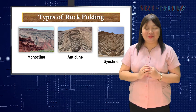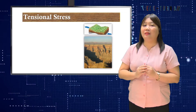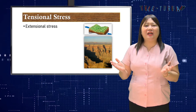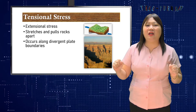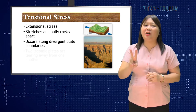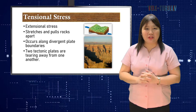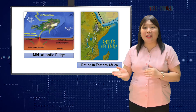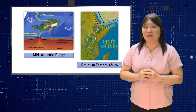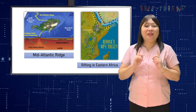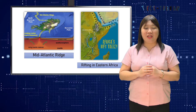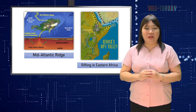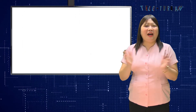Opposite to compressional is tensional stress, sometimes known as extensional stress. Tensional stress stretches and pulls rocks apart, and occurs along divergent plate boundaries where two tectonic plates are tearing away from one another. An example is the Mid-Atlantic Ridge, where the plates carrying North and South America are moving west while the plates carrying Africa and Eurasia are moving east. Another example is the rifting taking place in parts of eastern Africa — a process where an existing plate begins to split itself into two pieces.